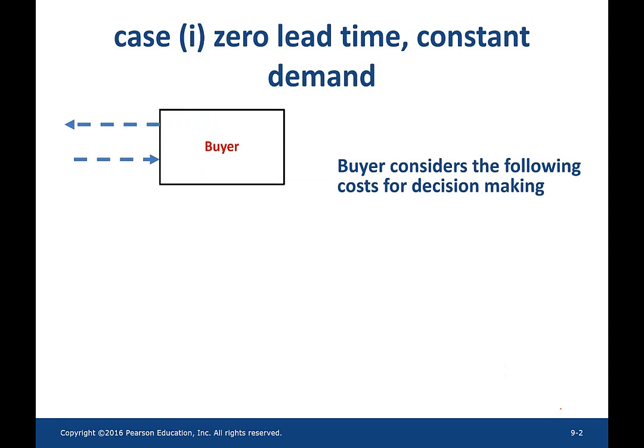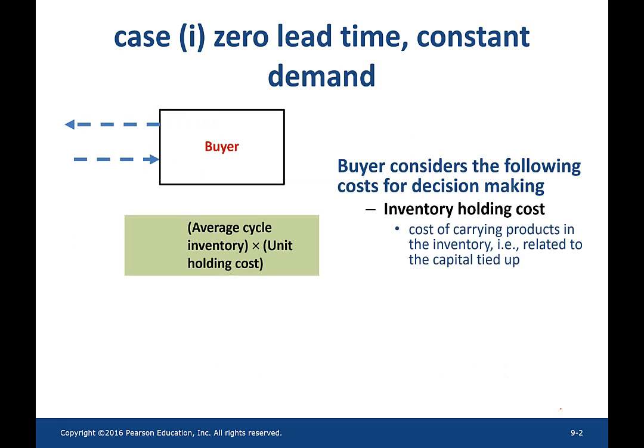The buyer should consider the following costs for decision making. First one is the inventory holding cost. This cost occurs when the buyer carries products in inventory — it could be related to renting the warehouse facility, utility paid, labor work in the warehouse facility, and so on. This inventory holding cost is proportional to two quantities: the average cycle inventory and the unit holding cost. Average cycle inventory is nothing but half of the ordering quantity.